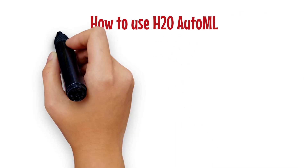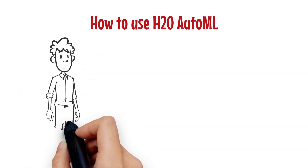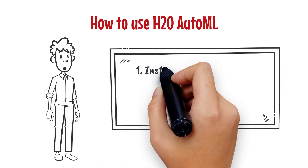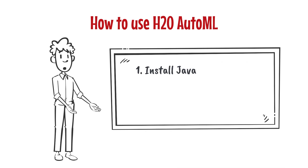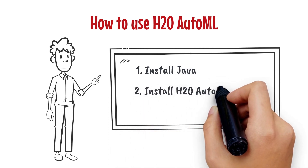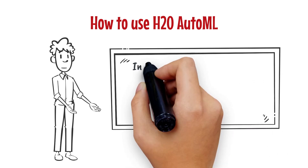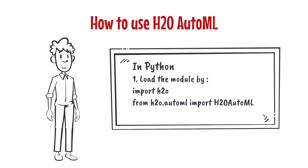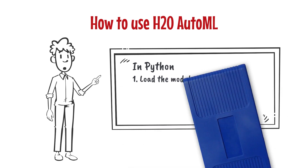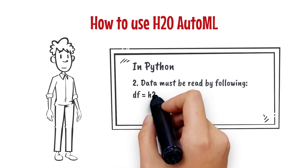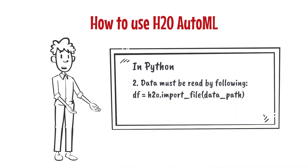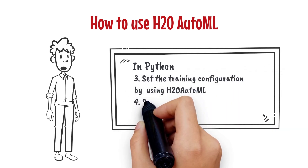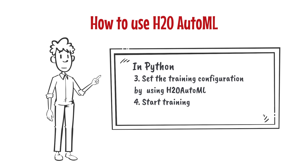How to set up the H2O AutoMachine Learning Library? Here I give brief instructions to Python programmers. The first step is to install Java, which is required by the library. And the second step is to install the library. In your Python code, the first step is to import the module by using the following two commands. Then, in the second step, you need to import the data into the format which can be recognized by H2O. The third step is to set up your training configuration by using the H2O AutoMachine Learning command.